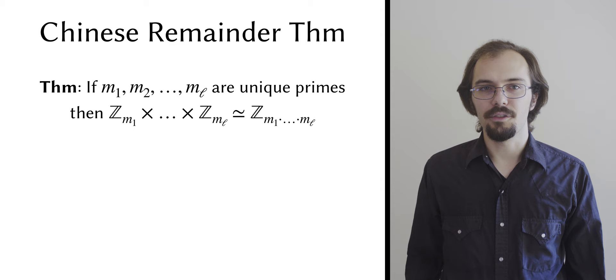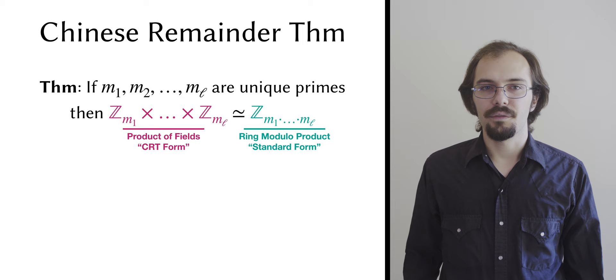We'll talk about values in these spaces a lot, so I'm going to color code them to make it easier. Values in the product of the fields modulo the individual primes will be magenta. We call this the CRT form. Values in the ring modulo the primordial number will be teal, and we'll call this standard form.